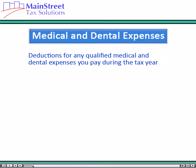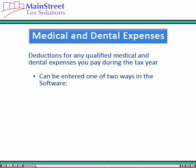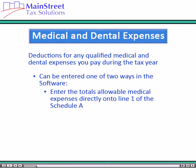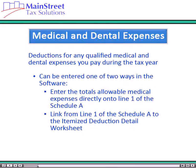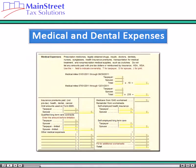If you itemize deductions, you are allowed to take a deduction for any qualified medical and dental expenses you pay during the year. In this software, you can enter your medical expenses in either of two ways: enter your total allowable medical expenses in Schedule A on Line 1, or link from Schedule A Line 1 and itemize your medical expenses in the Itemized Deduction Detail Worksheet. This is the preferred method of entering the medical expenses. This worksheet provides space for you to enter each medical expense separately, allowing you to keep a record of these expenses in case it is needed later. The software then totals the medical expenses and enters the appropriate amounts on Schedule A Lines 1–4.